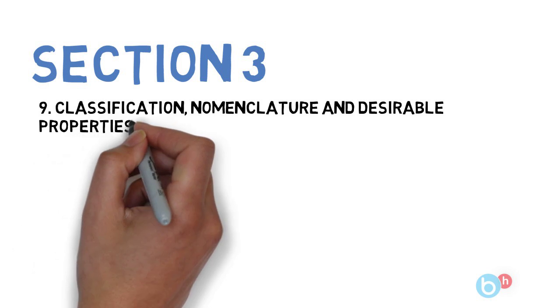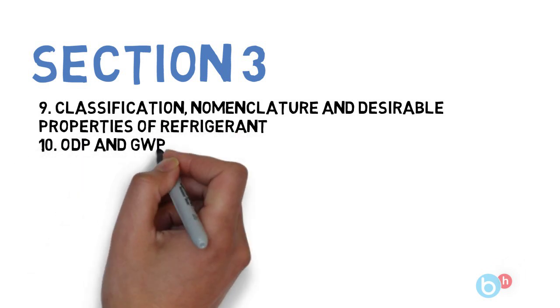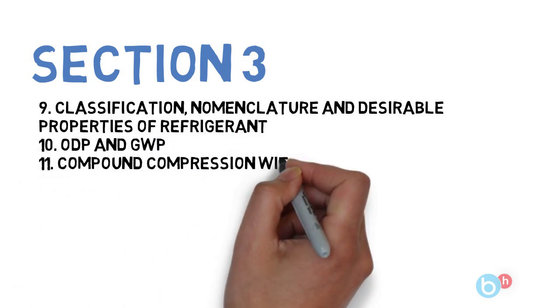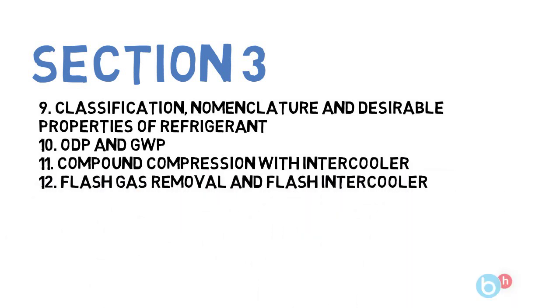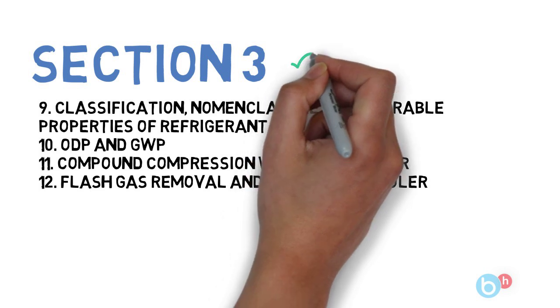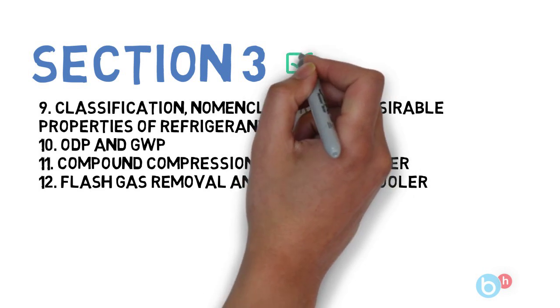ODP and GWP, next is Compound Compression with Intercooler, next is Flash Gas Removal and Flash Intercooler, and the last one for this particular section is Assumption for Fuel Air Cycles. So these 4 questions you have to do for section 3.